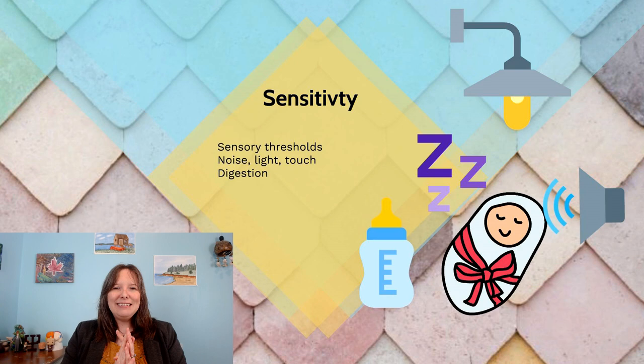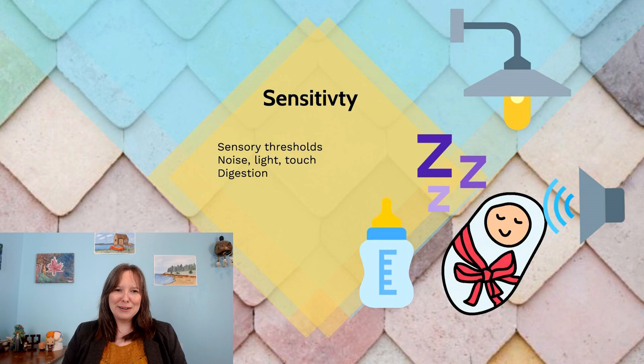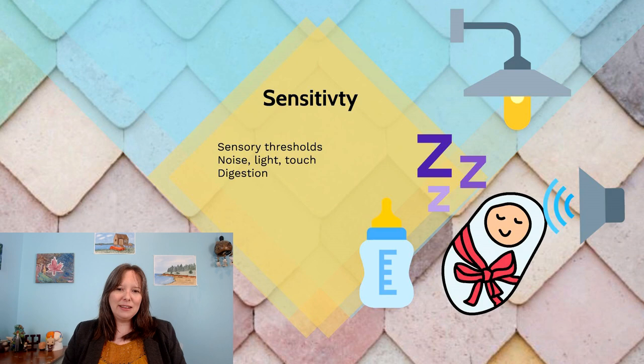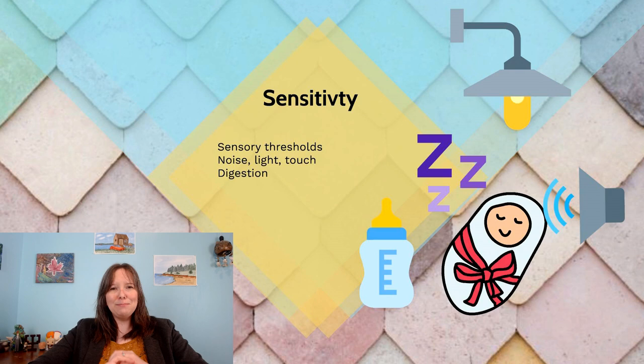The final dimension is sensitivity, which overlaps with approach and adaptability but specifically addresses sensory thresholds in a physical sense. From infancy, some of us can sleep with lights on and television on, while others need complete darkness and silence. Some transitioned fine from breast milk to formula to solids, while others experienced intense digestive pains and took long to adapt due to a more sensitive system. A more sensitive child may be less adaptable because their experience of the sensory world is more overwhelming.